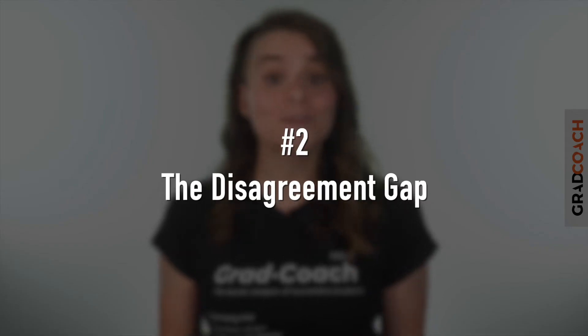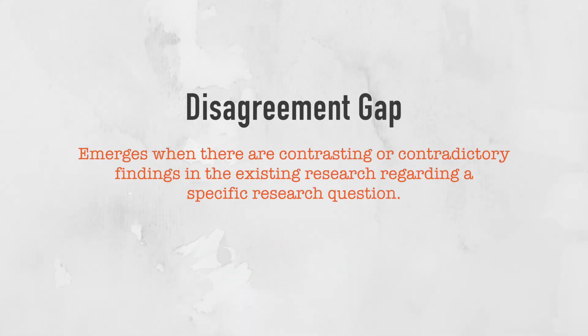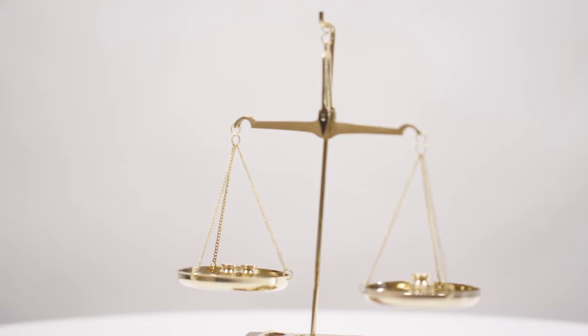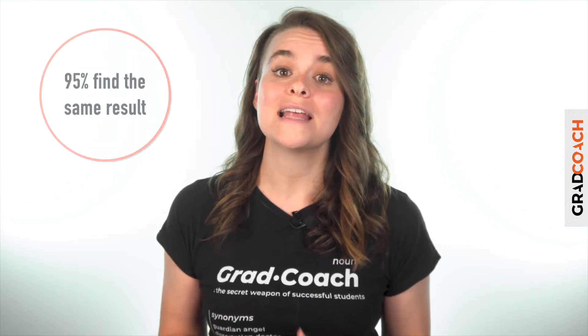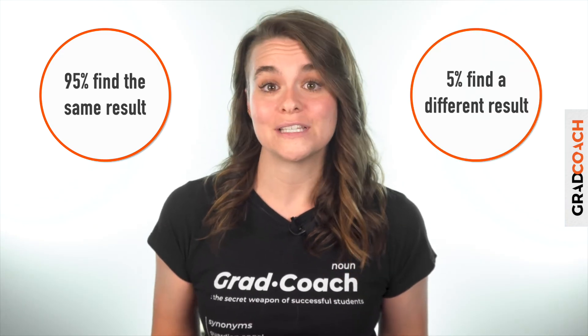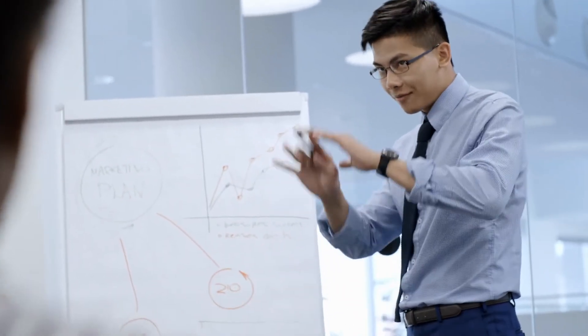The next type of research gap is the disagreement gap. As the name suggests, the disagreement gap emerges when there are contrasting or contradictory findings in the existing research regarding a specific research question or set of questions. The hypothetical disease example we looked at earlier reflects a disagreement gap. Importantly, for this type of research gap, there needs to be a relatively balanced set of opposing findings — a situation where 95% of studies find one result and 5% find the opposite wouldn't constitute a disagreement. You'll need to show that the opposing findings aren't simply a corner-case anomaly.